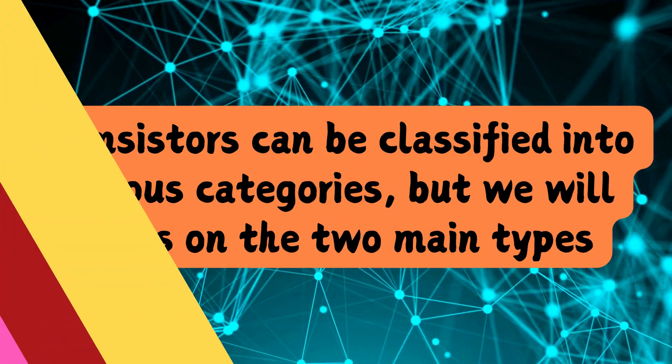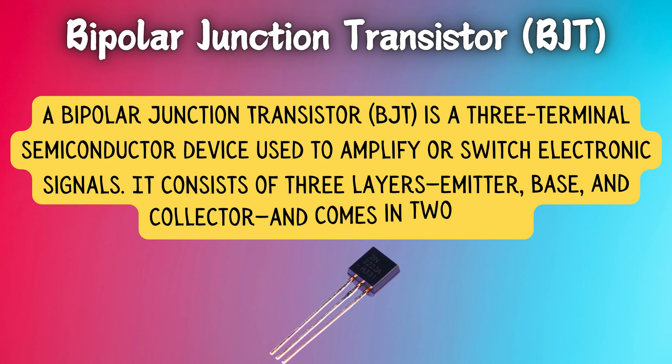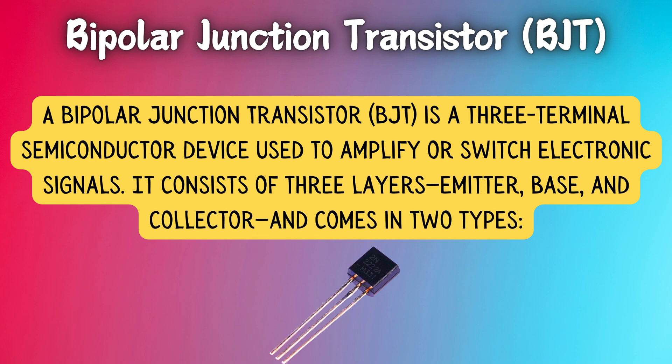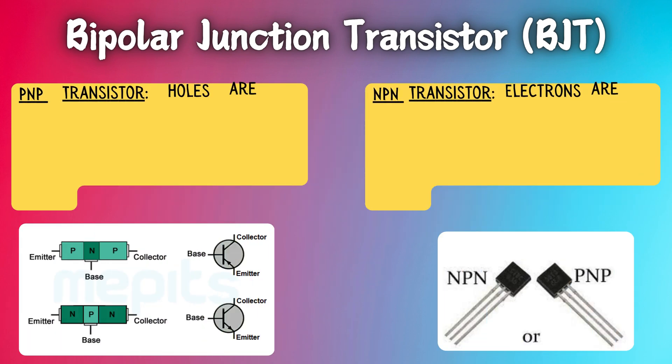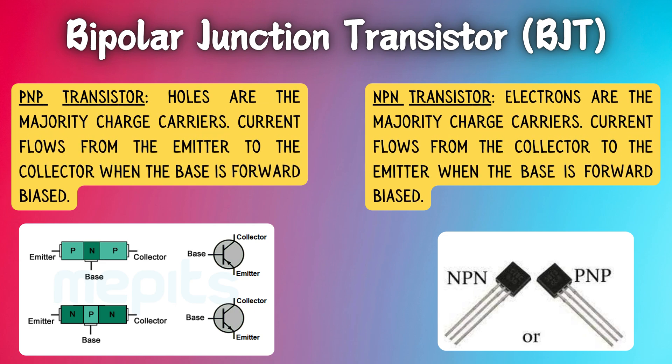A Bipolar Junction Transistor (BJT) is a three-terminal semiconductor device used to amplify or switch electronic signals. It consists of three layers — emitter, base, and collector — and comes in two types. PNP transistor: holes are the majority charge carriers; current flows from the emitter to the collector when the base is forward biased. NPN transistor: electrons are the majority charge carriers; current flows from the collector to the emitter when the base is forward biased.